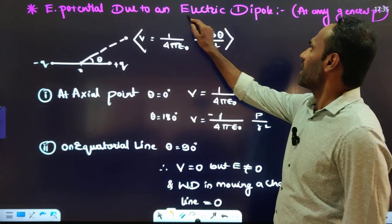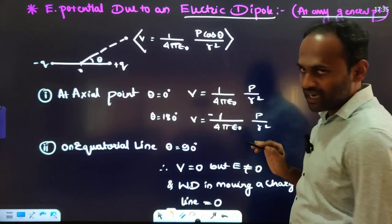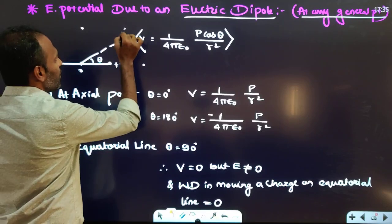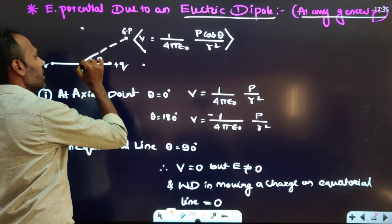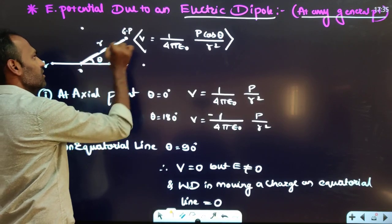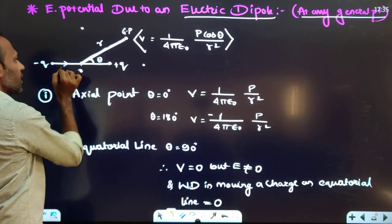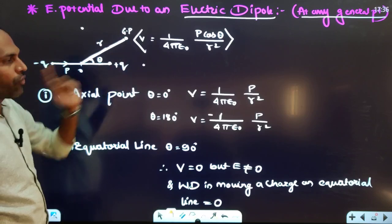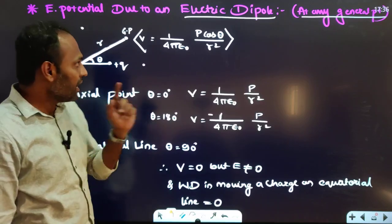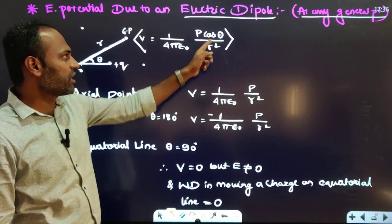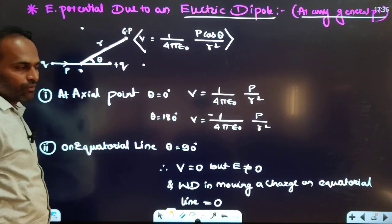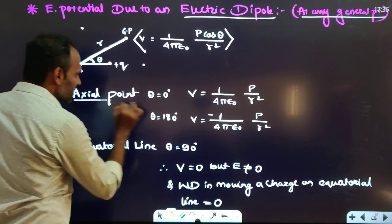Electric potential due to an electric dipole at any general point — neither at the axial point nor at the equatorial point — at a general point at distance r, with the line joining that point making an angle theta with the axis of the dipole: electric potential at the general point is (1/4πε₀) × P cosθ / R².